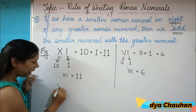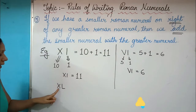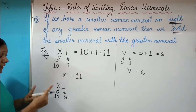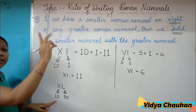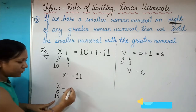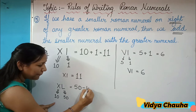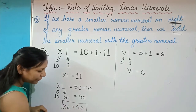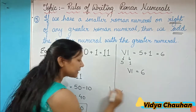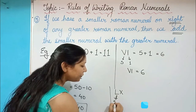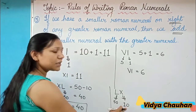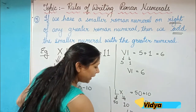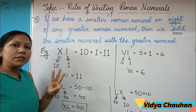We can use these same rules for many other numbers. For example, XL — X is 10 and L means 50. Using rule 2, since we have a smaller value on the left of the bigger one, we subtract: 50 minus 10 equals 40, so XL represents 40. Conversely, LX — L is 50 and X is 10 — the smaller value is on the right, so we add: 50 plus 10 equals 60, meaning LX represents 60. These three rules are used whenever you convert between Roman numerals and Hindu-Arabic numbers.